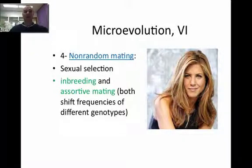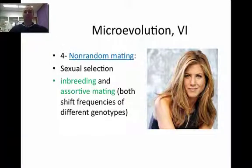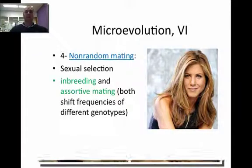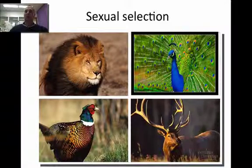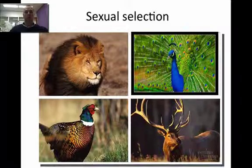The next one is non-random mating. There's a reason why certain organisms select other organisms — there's sexual selection going on. We can't have things like inbreeding, which involves closely related organisms, or assortative mating, as they can shift the frequency of alleles. When you talk about sexual selection, organisms are often selected based on physical characteristics, such as lions with a huge mane or peacocks with the most beautiful feathers. Whichever male has the most attractive features to the female is the one who gets to procreate.